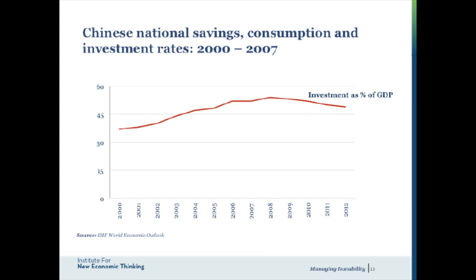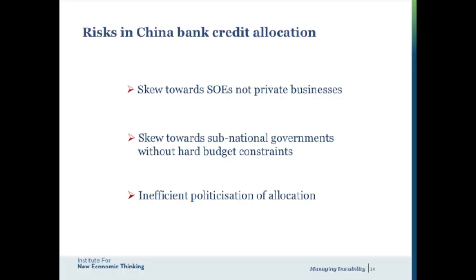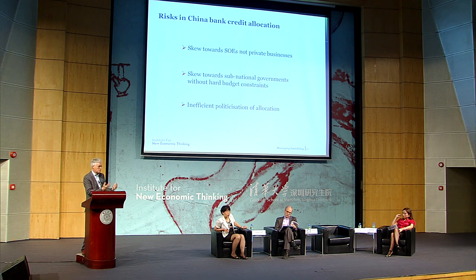The message that went out to state-owned enterprises and to local governments borrowing money through local government financing vehicles was: invest. So not surprisingly, we had an expansion of credit and a very significant increase in investment as a percent of GDP as well. That has played a useful role in keeping the Chinese economy going over the last four years, but it creates very real risks — risks of serious misallocation of credit towards not the most productive ends. We have a skew towards state-owned enterprises, not private banks, and towards local governments not subject to hard budget discipline, who can sometimes usefully use this investment capacity, but sometimes waste it.